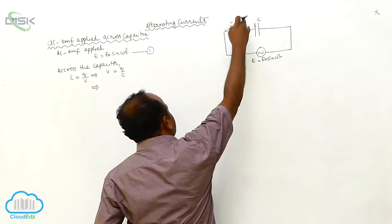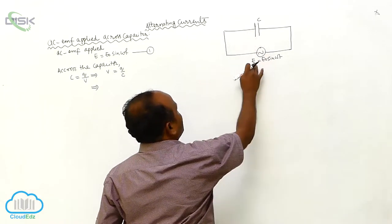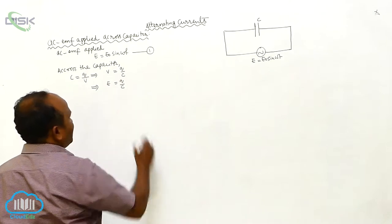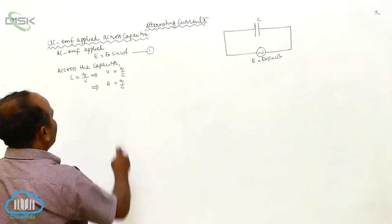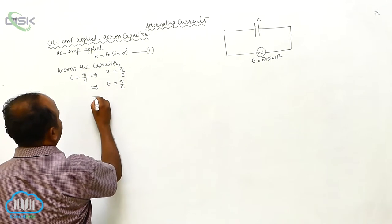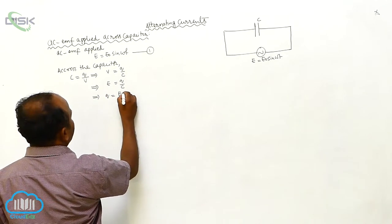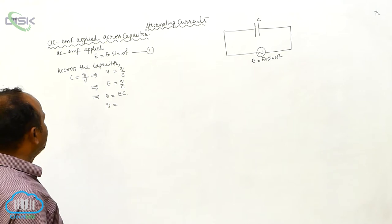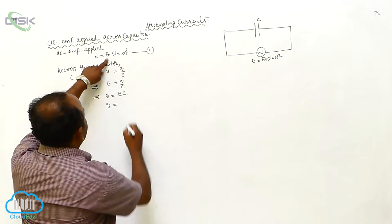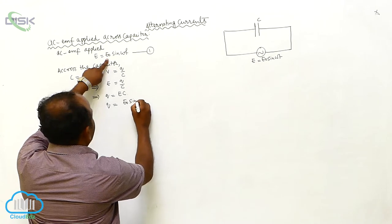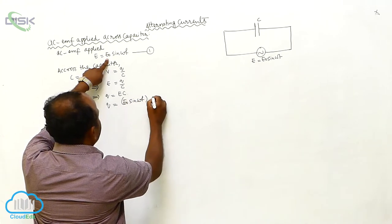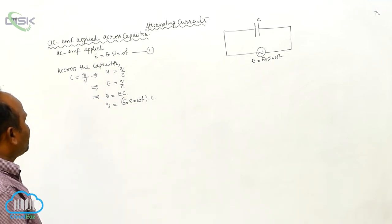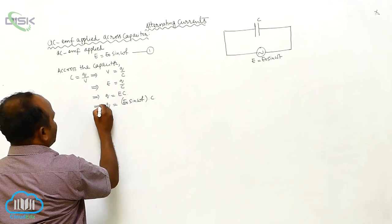Whenever only a pure single capacitor is there, the potential difference equals E-naught sin omega t. Therefore E is equal to Q by C, which gives Q is equal to E into C. So Q is equal to E-naught sin omega t into C. Here Q is the charge.